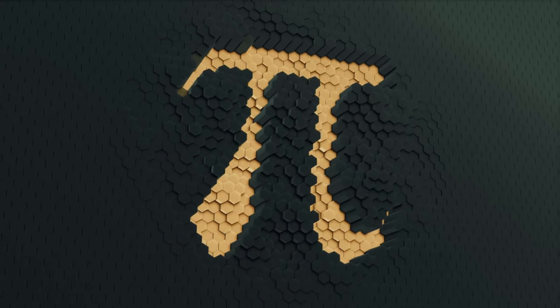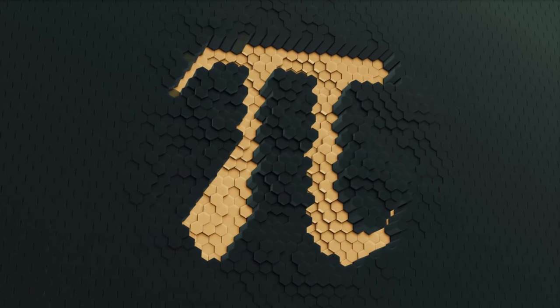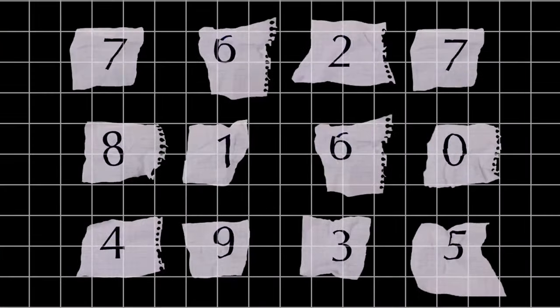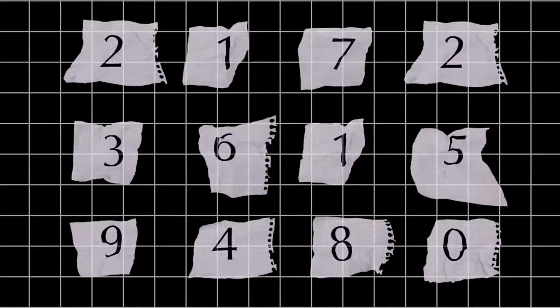There is an abundance of surprising facts about this constant. Stanislaw Ulam, a Polish-American mathematician, in 1965 wrote the numbers of pi on graph paper. He put the three in the center and moving in a clockwise spiral, wrote down the numbers after the decimal point.